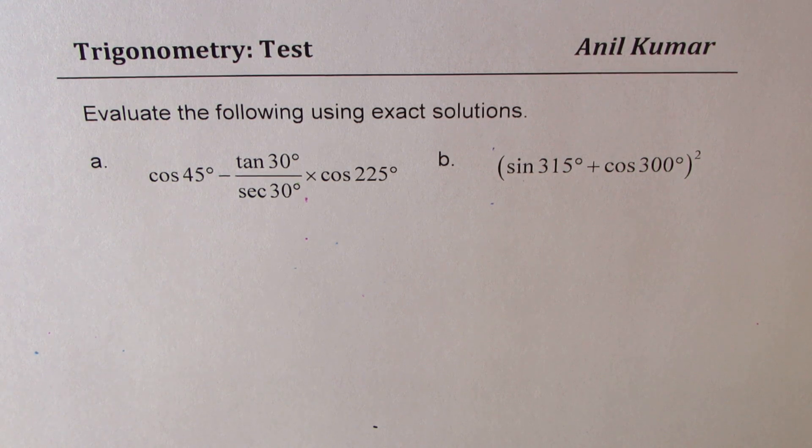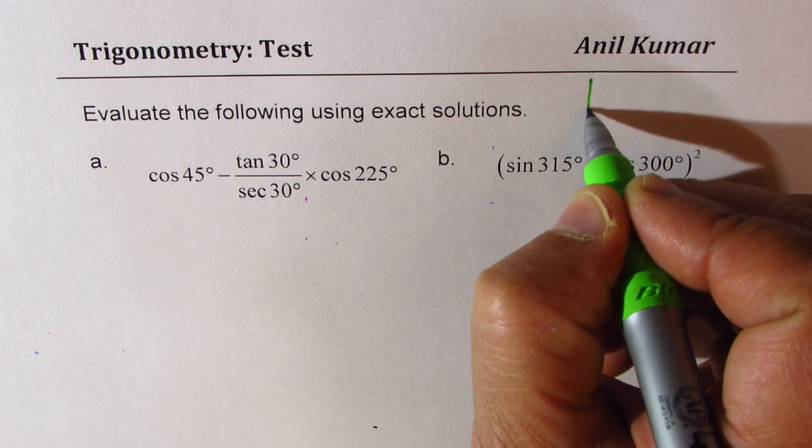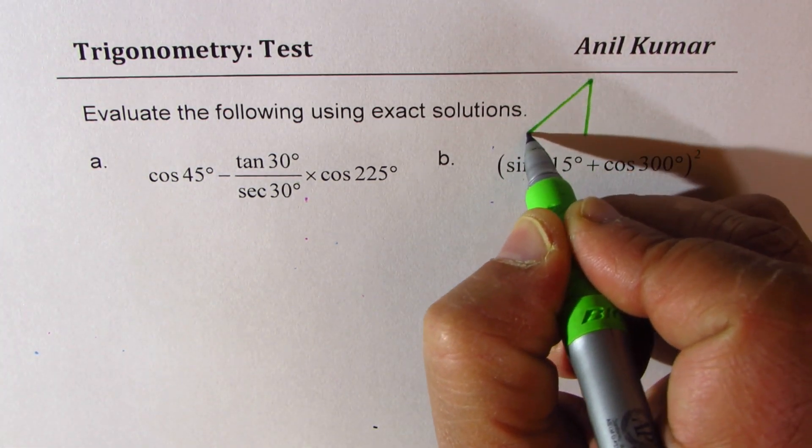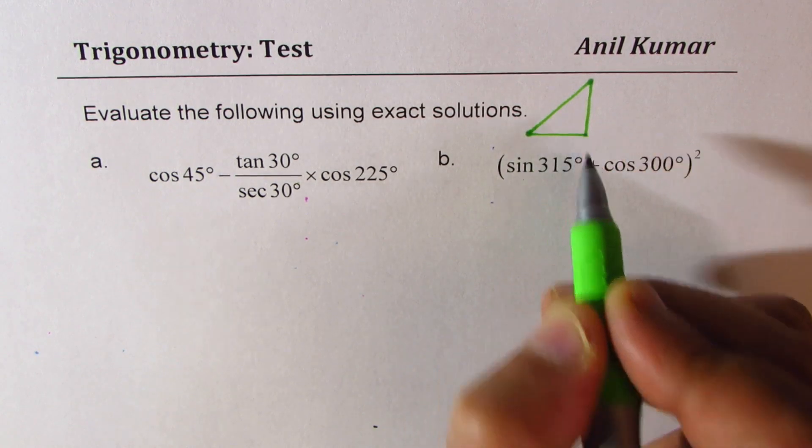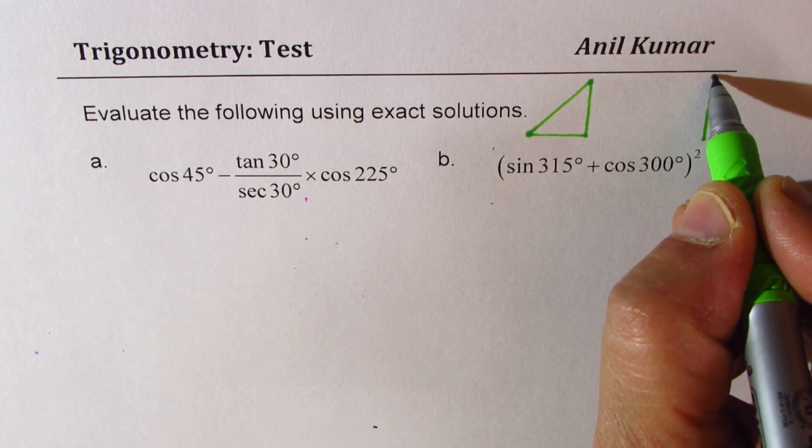We are going to use special triangles, so it's a good idea to sketch them. One of them is 45 degrees, the other one is 30-60-90.